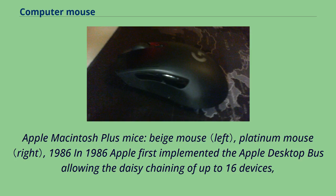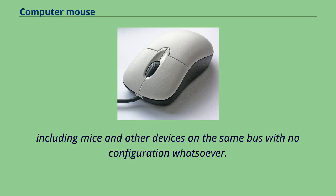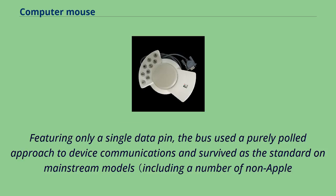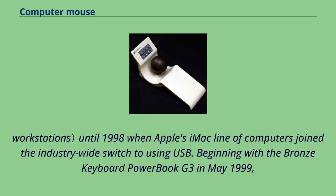In 1986, Apple first implemented the Apple Desktop Bus, allowing the daisy chaining of up to 16 devices — including mice and other devices — on the same bus with no configuration required. Featuring only a single data pin, the bus used a purely polled approach to device communications and survived as the standard on mainstream models, including non-Apple workstations, until 1998 when Apple's iMac joined the industry-wide switch to USB.